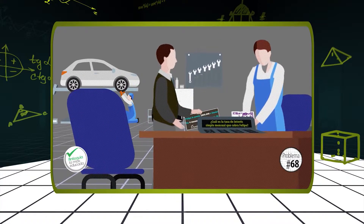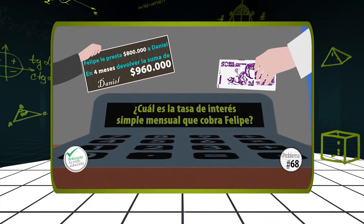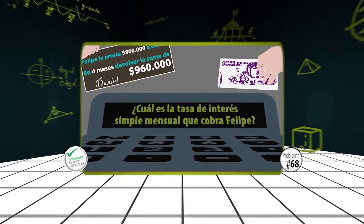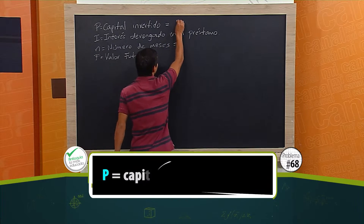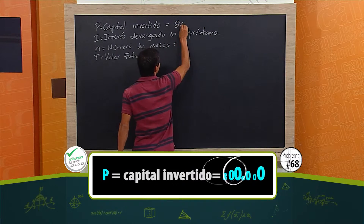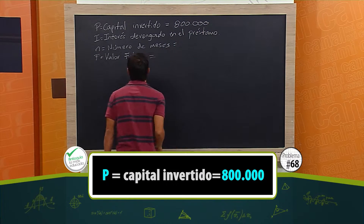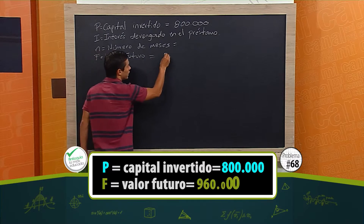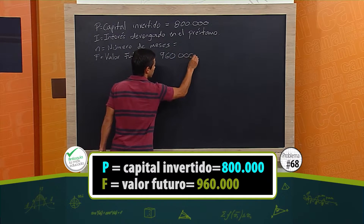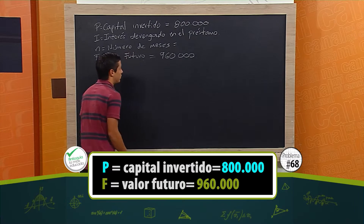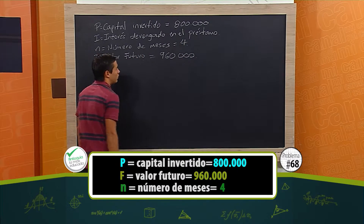¿Cuál es la tasa de interés simple mensual que cobra Felipe? Van a ser 800 mil pesos. El valor futuro, que es lo que quiere que le devuelvan, son 960 mil pesos. Y el número de meses son 4 meses.